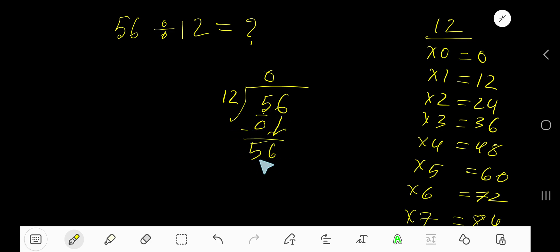56. 12 goes into 56 how many times? Look, 6 times, which is 5 times 60, which is greater, so 4 times actually. Write 4. 4 times 12 is 48. Subtract, you are getting 8.